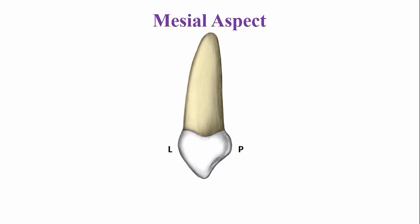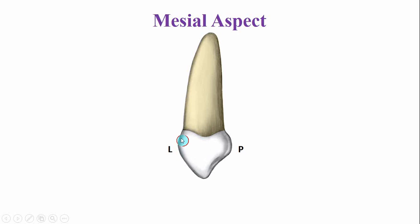This is the mesial aspect. From the mesial aspect, this is the labial surface and this is the palatal surface. The labiopalatal width at the cervical area is much greater compared to the labiopalatal width of the deciduous central incisor or lateral incisor. The labial cervical ridge is prominent. This is the cervical line, and it usually curves towards the crown surface.